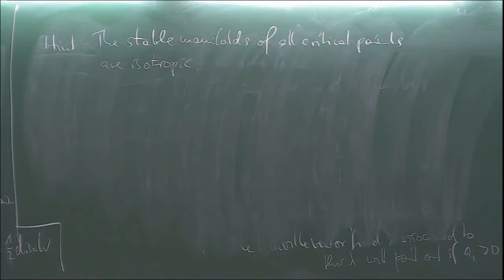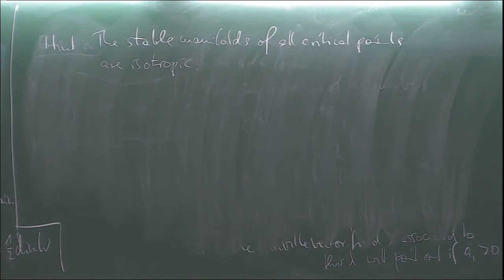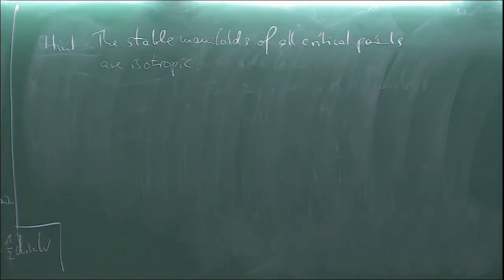Generally Liouville domains can have higher-dimensional topology — they can have the homotopy type of a CW complex of dimension 2n minus 1. First examples were given by Dusa McDuff, then later Geiges produced more examples, and then Chris and collaborators produced even more examples. But still, general Liouville domains are far less well understood than Weinstein domains.